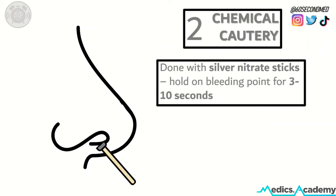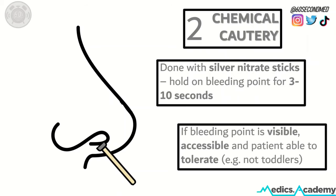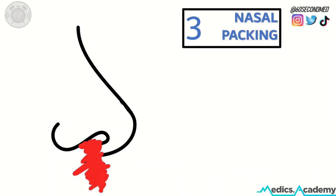If they're still bleeding, we can consider chemical cautery. This is done with a silver nitrate stick held on the bleeding point for 3 to 10 seconds. This can be done if it's practical to do so, if the bleeding point is visible, and if the patient is able to tolerate the procedure.